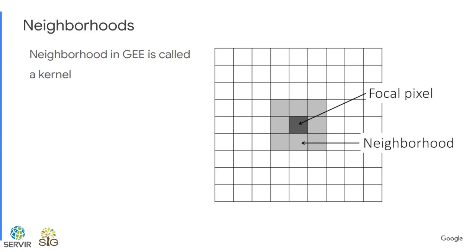For neighborhoods, what's called the kernel in Google Earth Engine can be different sizes and different shapes, and the different pixels in it can have different weights. When we do the transformation for our focal pixel, all of that surrounding information is used. The algorithm works as a moving window — you start at a pixel, then move to the next pixel using its neighborhood, and so on.